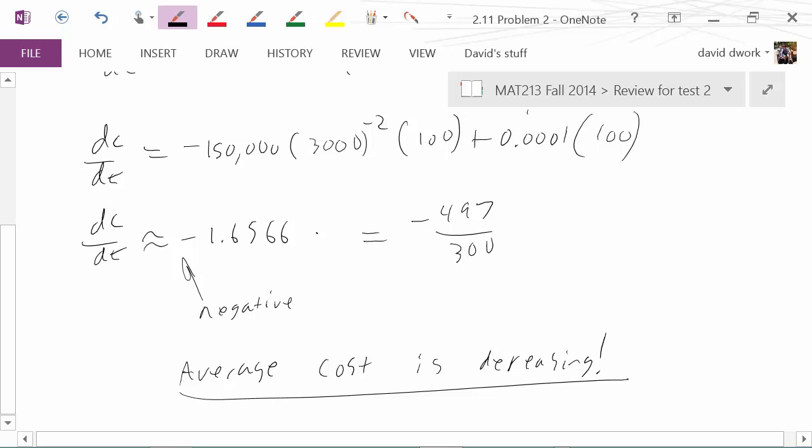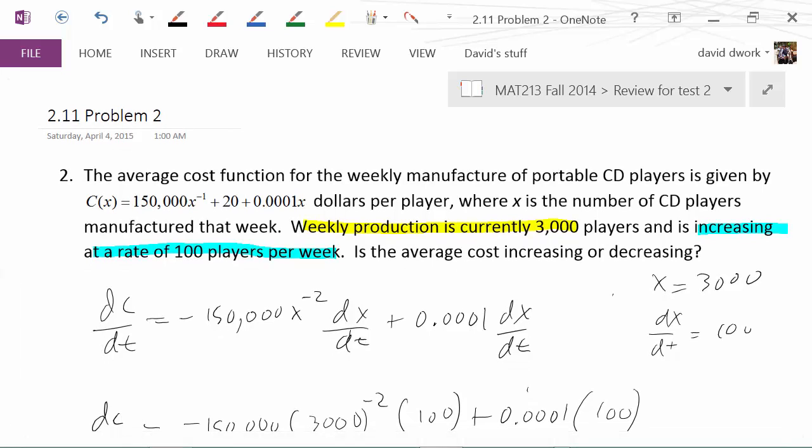So the trick to related rates is to recognize that the problem isn't asking for the change in cost per unit, dc/dx. That would be change in cost per change in CD player. It didn't ask for that. It was talking about the change in cost per time and the change in CD player per time. So that was your tip off that you want to do the derivative with respect to time. You use implicit differentiation and every single time you do a derivative of a variable, you always have to remember to tack on the dx/dt. Happy reviewing.